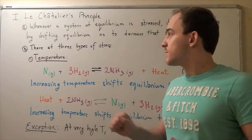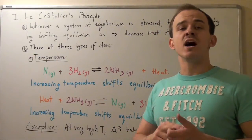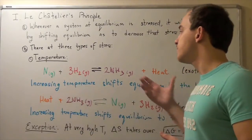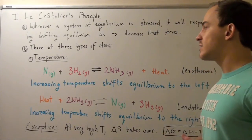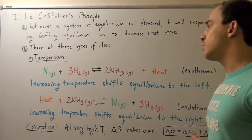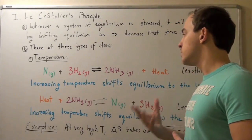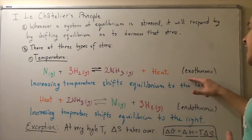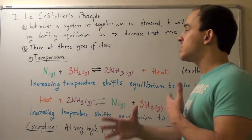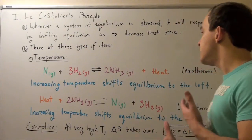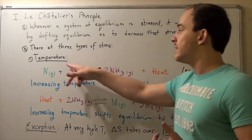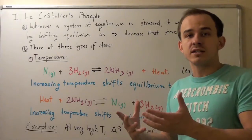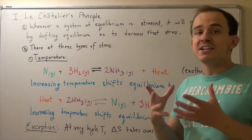Let's look at three stresses: temperature, pressure, and concentrations. Let's begin with temperature. Suppose we have the following reaction in which one mole of N in the gas state reacts with three moles of diatomic H2 in the gas state to produce two moles of ammonia also in the gas state and heat. So this is an exothermic reaction. Whenever we're talking about Le Chatelier's principle and we see that heat is produced, we can treat heat as a product.